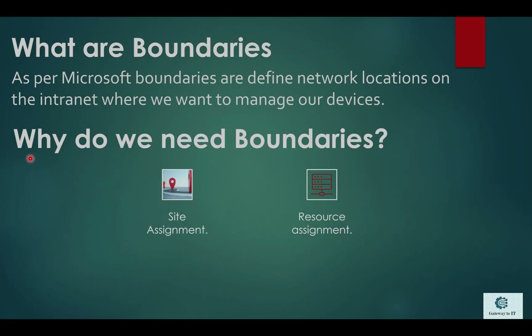To avoid those kinds of issues, we create boundaries. The first reason is resource assignment — a machine should not go to a different location or resource not defined in the boundary group, as it can cause high bandwidth utilization or failure to get any management point or distribution point. The second reason is site assignment — if we have multiple sites, we can define that India site is managed with the IND site and US site with the US site, using the boundary group configuration.